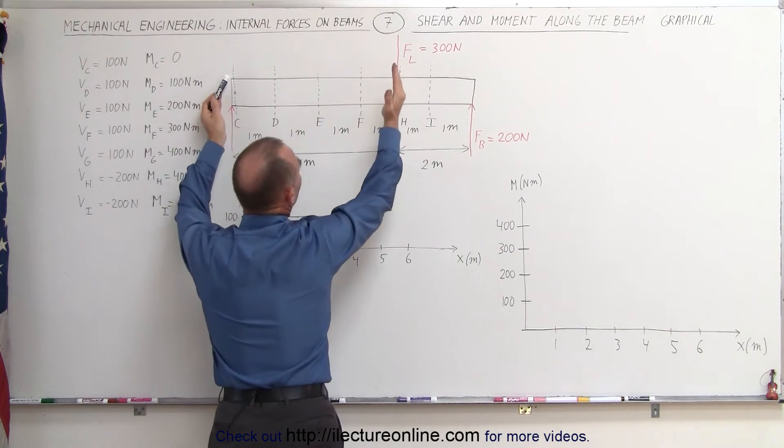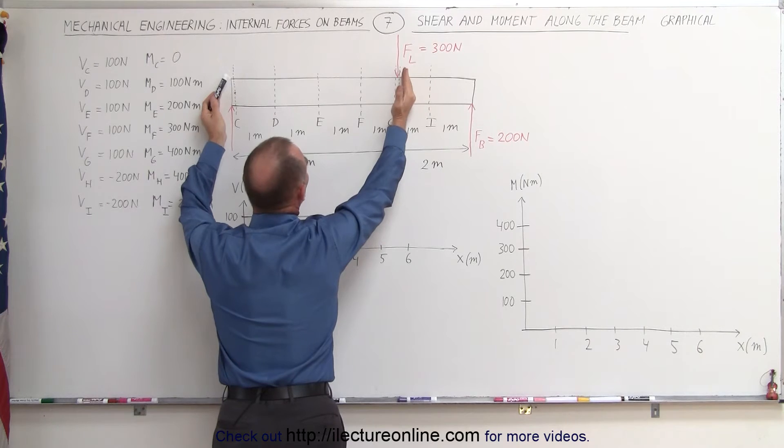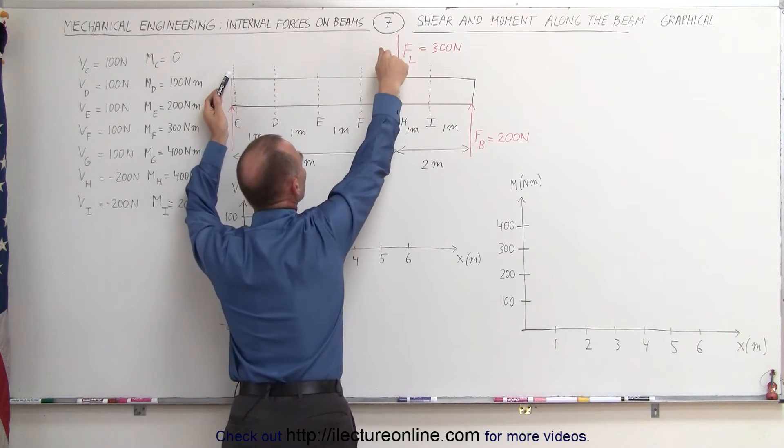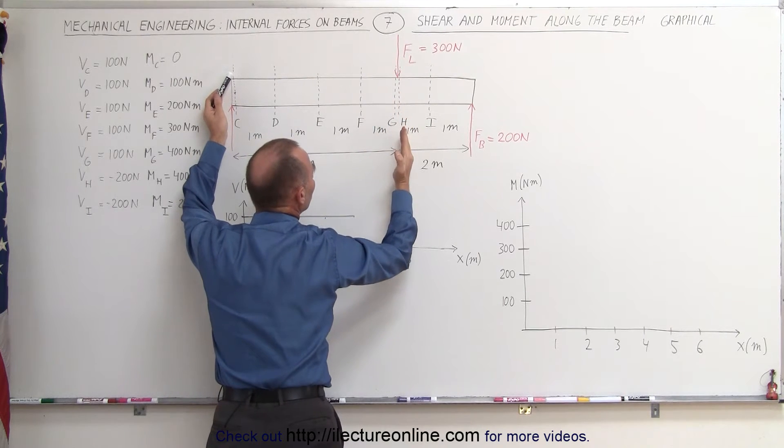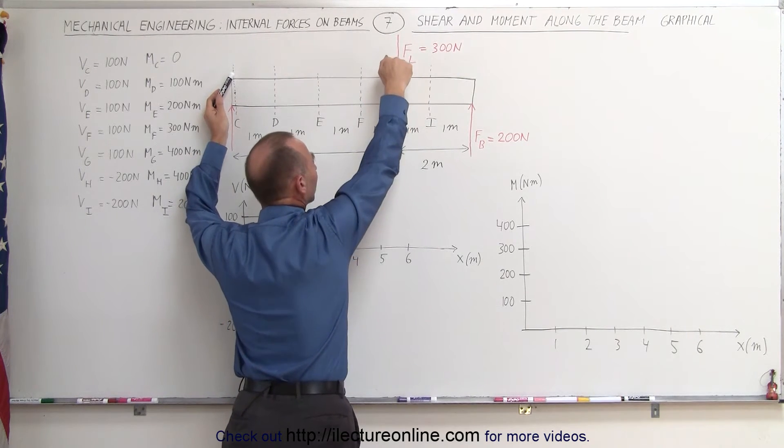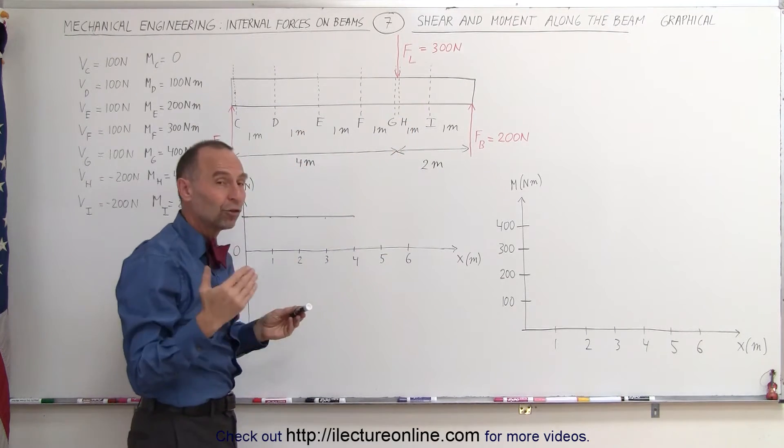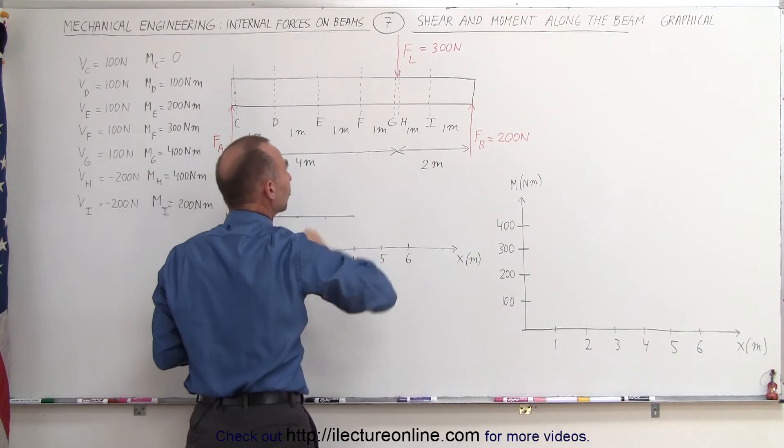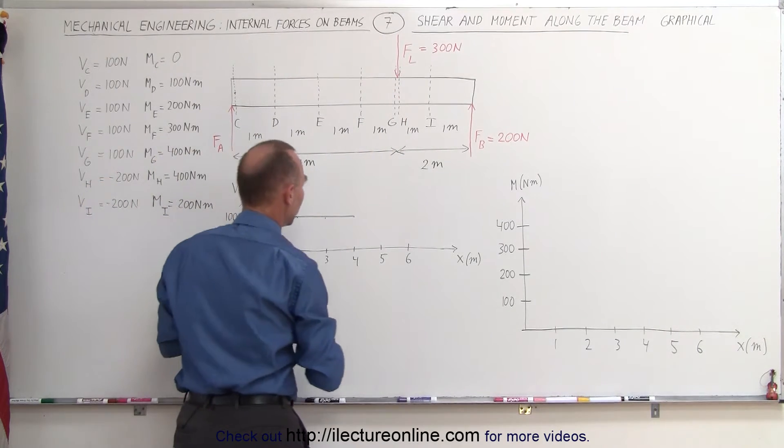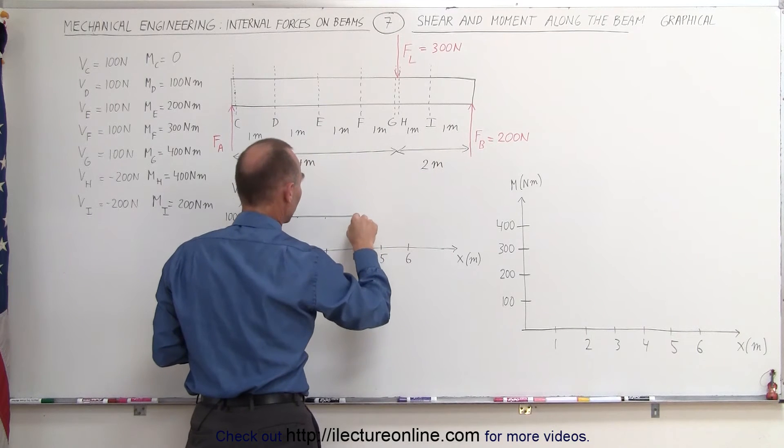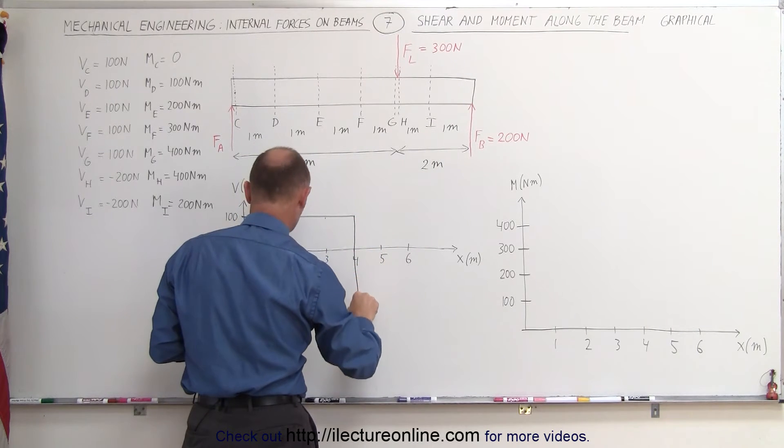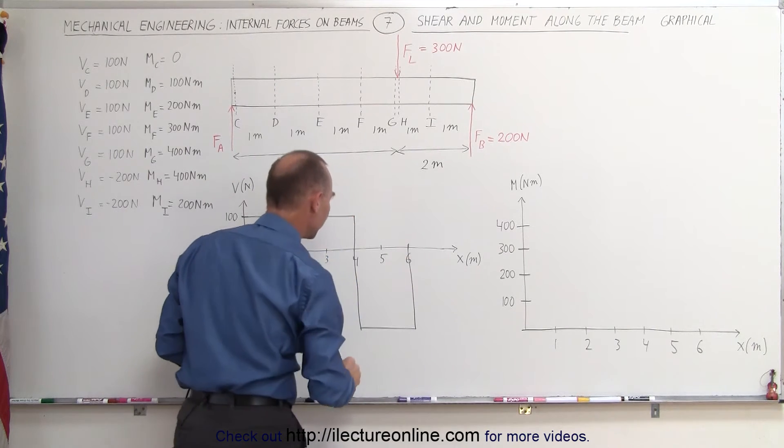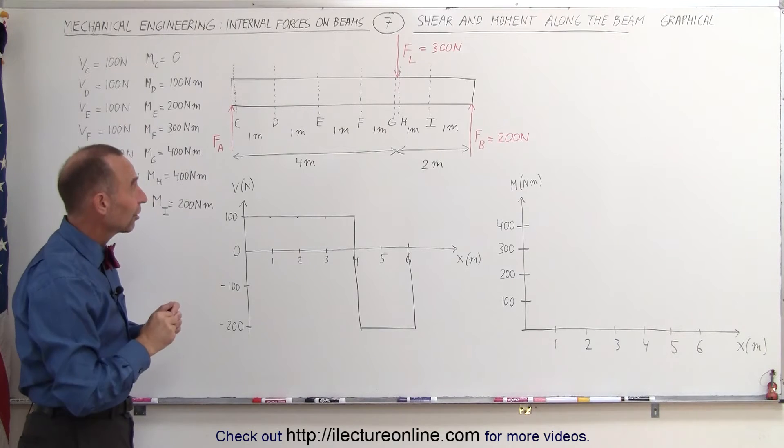Notice that once we get past the load force, the net force on the left section of the beam would be 300 newtons down, 100 newtons up, which would be 200 newtons downward, which gives us a shear force of 200 newtons upward. Remember that down is positive for the shear force on the left section of the beam, which means an upward shear force gives us a negative shear force, and it would then become a negative 200 for the next section of the beam. So the shear force drops to negative 200 and stays there until we get to the end of the beam. And that's a graphical representation of the shear force on the beam.